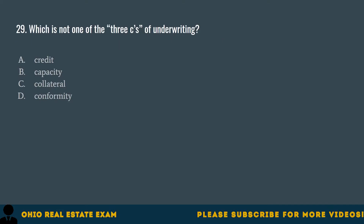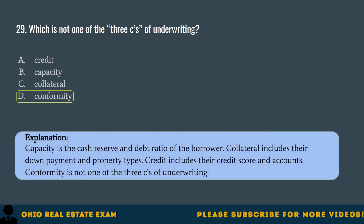Question 29. Which is not one of the three C's of underwriting? A. Credit. B. Capacity. C. Collateral. D. Conformity. The correct answer is D. Conformity. Capacity is the cash reserve and debt ratio of the borrower. Collateral includes their down payment and property types. Credit includes their credit score and accounts. Conformity is not one of the three C's of underwriting.